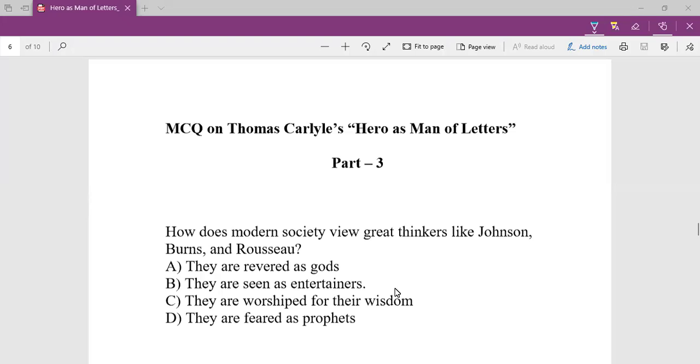The first question: how does modern society view great thinkers like Johnson, Burns and Rousseau? Thomas Carlyle discusses Samuel Johnson, Robert Burns and Rousseau. They are great thinkers. But how does the modern society look at them? The modern society looks at these three great thinkers as mere entertainers. It doesn't treat great men as heroes.